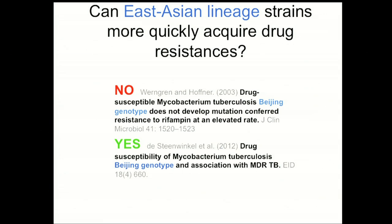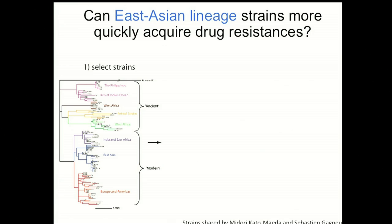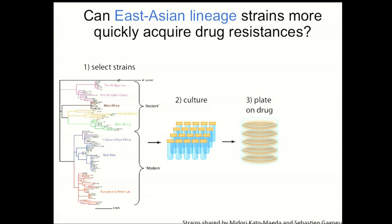We weren't the first to ask this question. There are two previous papers that have addressed this exact issue, asking at what rate East Asian strains acquire drug resistance, and they've come up with mixed results. We found collaborators that had a nice panel of clinical isolates, from which we chose some Euro-American strains and some strains from the East Asian lineage. We cultured those in parallel, plated them on antibiotic — rifampicin to begin with — and asked how many drug-resistant mutants are present in each culture.